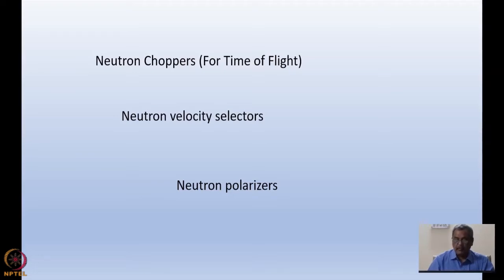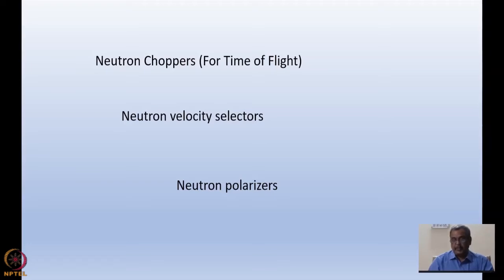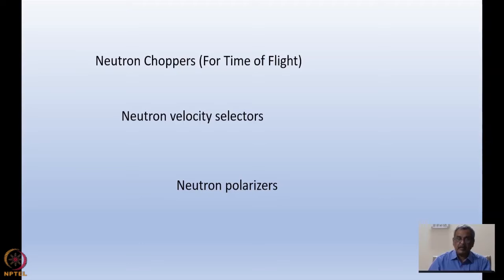Neutron polarizers help us to get one spin component out from a given beam of unpolarized neutrons. The neutron is a spin-half particle, so with respect to any direction you can have two possible spins: plus half or minus half. Devices like neutron super mirrors or Heusler alloy monochromators can remove one polarization component, giving us a polarized neutron beam important for studying magnetic structure and dynamics in materials.